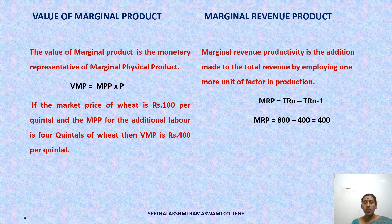Marginal revenue product (MRP) is the addition made to total revenue by employing one more unit of factor in production. The formula is: MRP = Total Revenue of N labor − Total Revenue of (N−1) labor. For example, by employing one unit of labor the total revenue is ₹400, and by employing two units the total revenue is ₹800. So the addition made to total revenue by employing one more unit of labor is ₹400, which is the marginal revenue product.